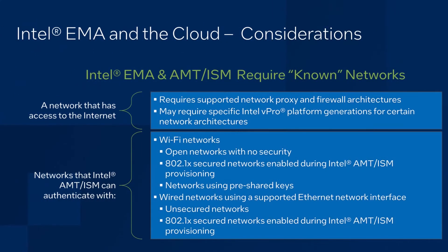If you plan on using Intel EMA with Intel AMT or ISM and a cloud-based install, there are a few things to take into consideration. You need to have what I call a known network. Known networks have two common attributes. First, the network must have access to the internet so that your Intel EMA server can communicate with the device you want to manage. If your network utilizes proxy servers, you will need to configure Intel AMT or ISM to communicate with them.